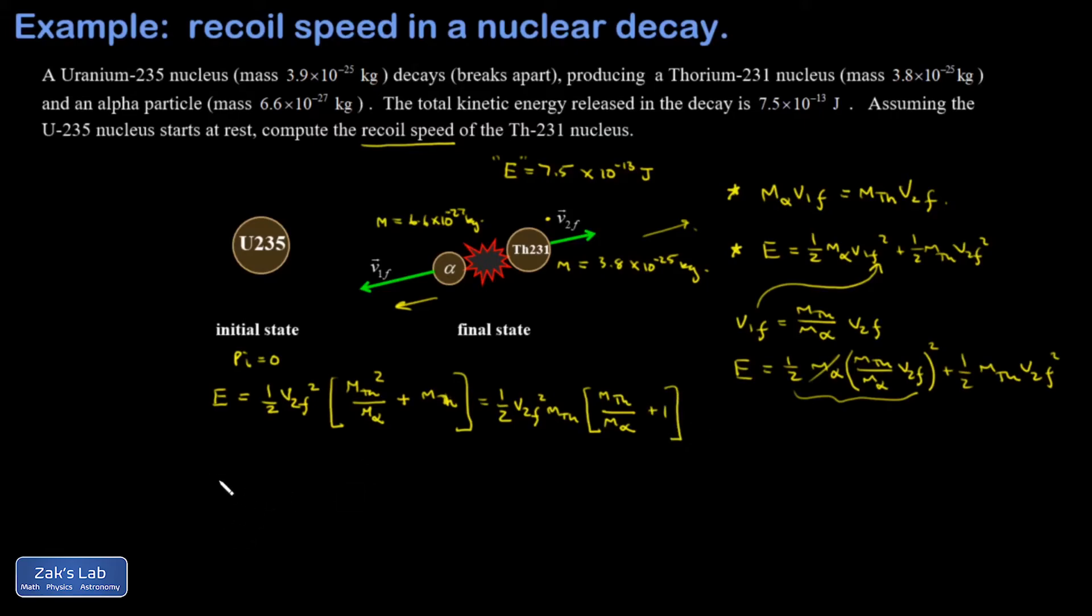So V2 final squared is going to be 2E divided by mass of the thorium times mass of the thorium over mass of the alpha particle plus one.